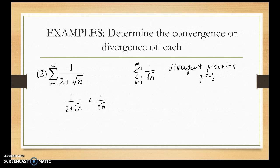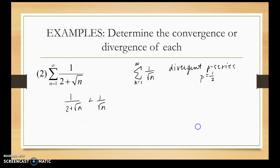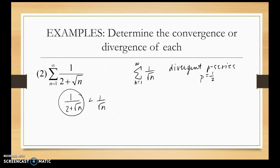If the smaller series diverges, then the larger series will diverge. But here the smaller series is what's in question — so 1 over √n is not the right comparison. Since the smaller series is the divergent one, we don't get anything useful from this comparison test.